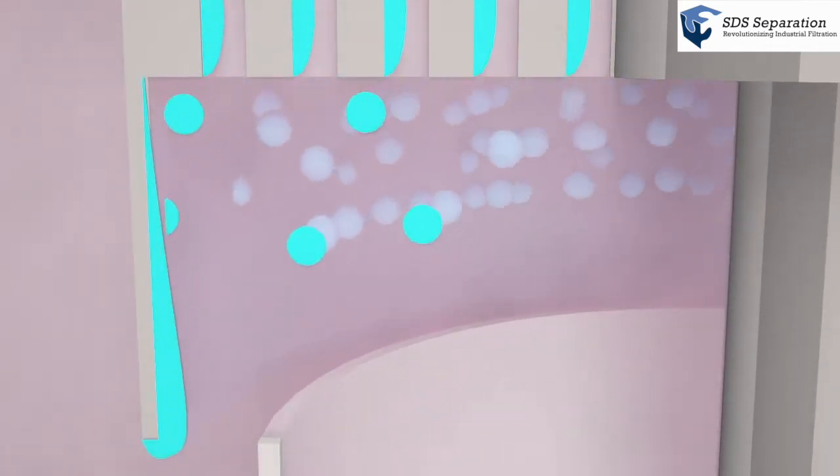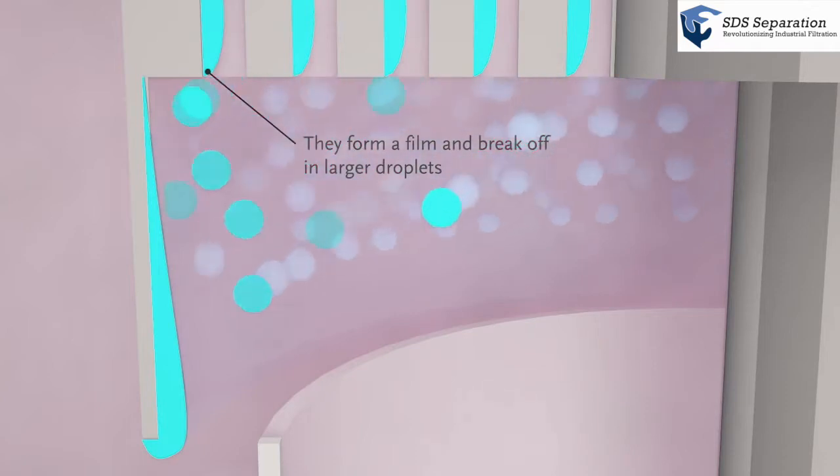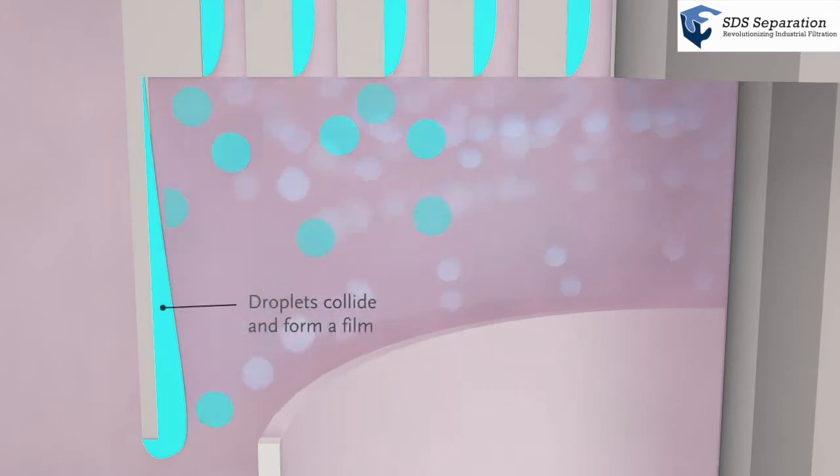At the end of the channel, the film breaks up into large droplets. These droplets are centrifugated to the extended outer wall of the rotating element.